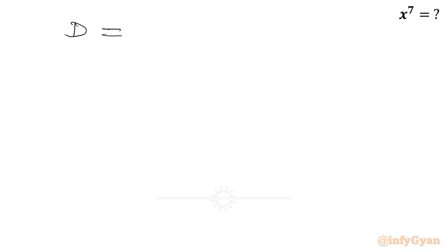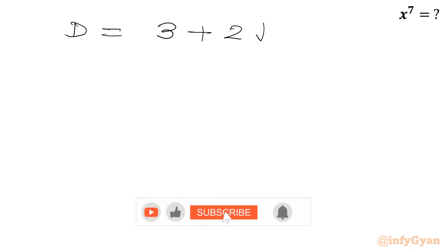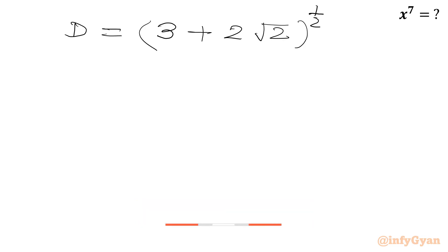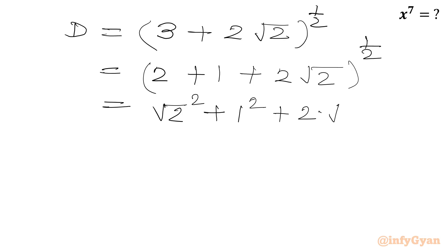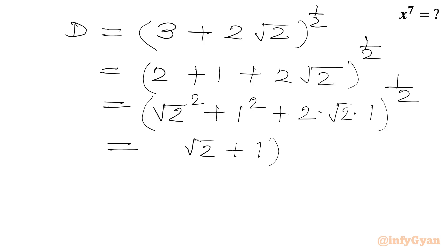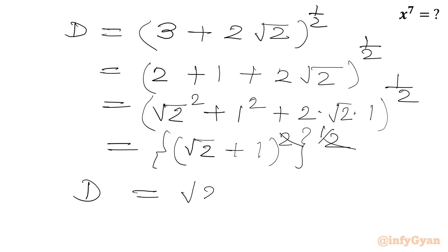I can write d equal to (3 plus 2 root 2) to the power 1 over 2. Now we can split 3 as 2 plus 1, then we have 2 root 2, whole power 1 over 2. We write 2 as (root 2) squared, 1 as 1 squared, and 2 root 2 as 2 times root 2 times 1. So again it is forming (a plus b) squared. So the power 1 over 2 and 2 cancel, and we get our denominator: root 2 plus 1.